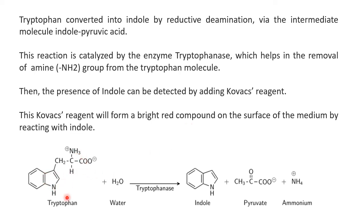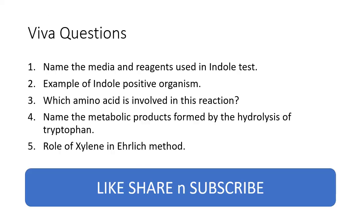This is the molecular structure of tryptophan, indole, pyruvate, and ammonia. You may be required to write this reaction completely in your practical exam, so do memorize it. This was about the indole test, and here are some viva questions: What is the name of the media used? What reagent is used? Give an example of an indole positive organism. Which amino acid is involved in this reaction? Name the metabolic products formed by hydrolysis of tryptophan, and what is the role of xylene in Ehrlich reagent?